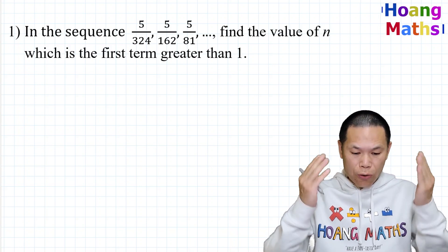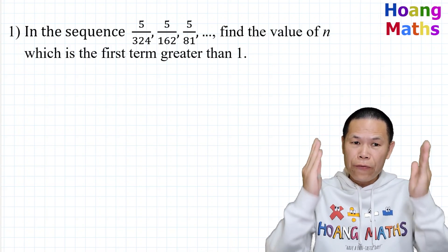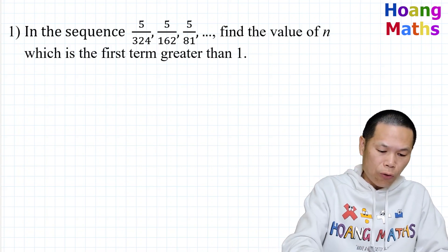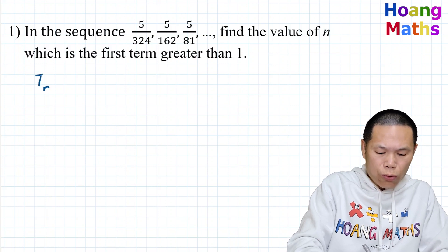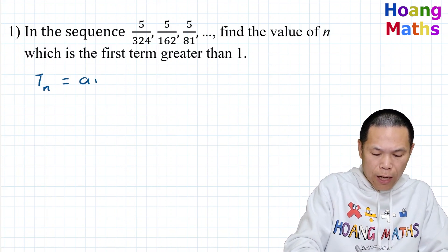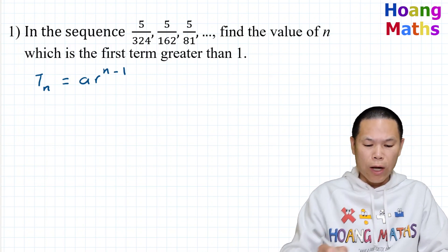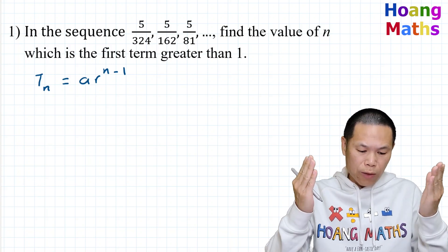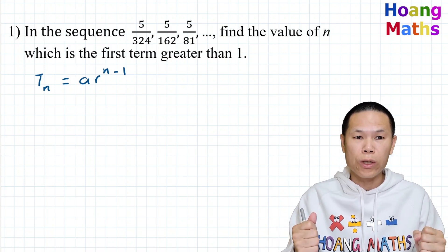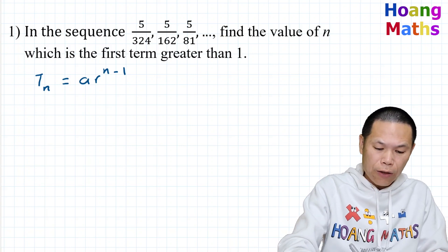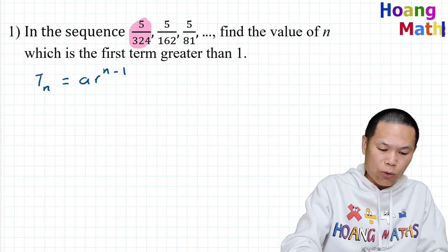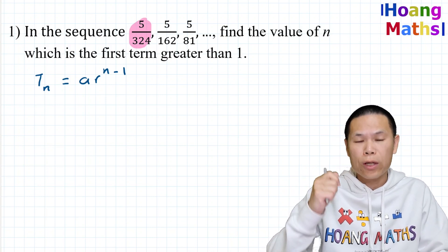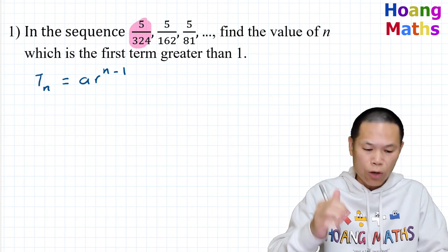First, we need to find the value of n which is the first term greater than one. To work this out, we need to find the general rule for this sequence. The general rule is t(n) = a × r^(n−1). We need to work out the value of a and the value of r. So a is the first term, and r can be found using term two over term one, or term three over term two.